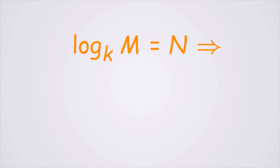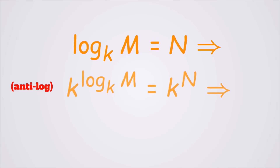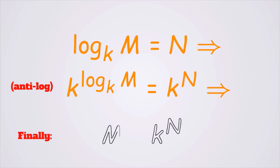Let's say log base k of m is equal to n. Just like how you can inverse addition using subtraction, we can take the anti-log to undo the logarithm on both sides. We basically take the base to the power of both sides. We will get k to the power of log base k of m is equal to k to the power of n. The k and the log base k cancel out on the left side, and finally we are left with m is equal to k to the power of n.